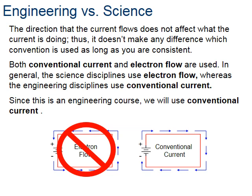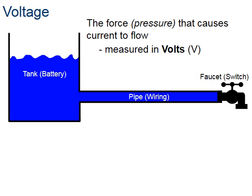We're going to analyze circuits using the conventional current, flowing from positive to negative. The reality is it doesn't really matter, as long as you stay consistent. So let's look at voltage. Remember, we had the three things: voltage, current, and resistance. Voltage — you can think of it like when you have a hose and you put your thumb over the end of it.